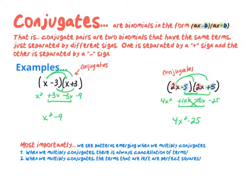When multiplying conjugates, there's always cancellation of the middle terms — here the 3x and negative 3x canceled, and here the 10x and negative 10x canceled. Not only that, but when we're done multiplying conjugates, the remaining terms are always perfect squares. We know the square root of x squared is x, the square root of 9 is 3, the square root of 4x squared, and the square root of 25. We're going to use this idea to get rid of square roots.